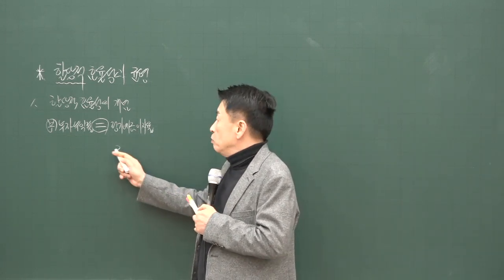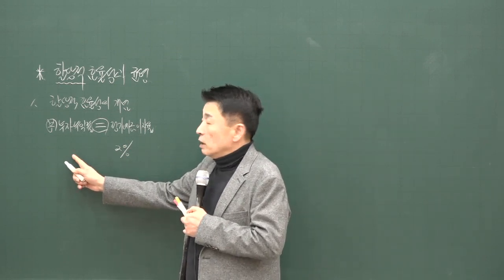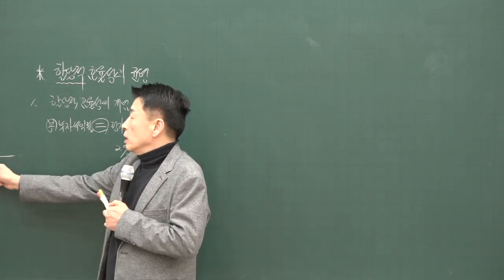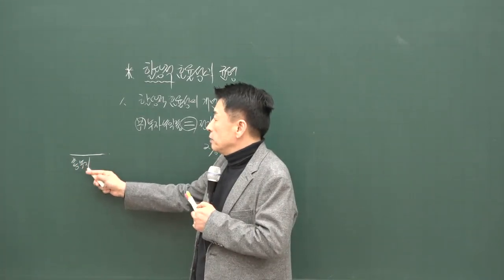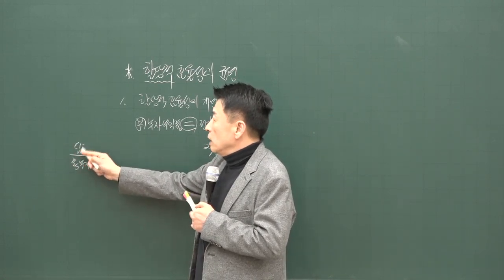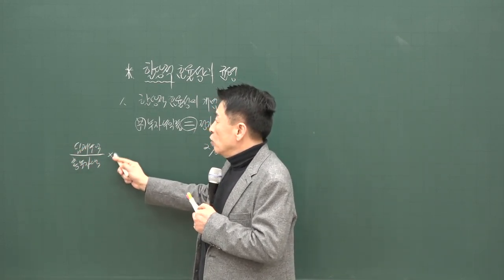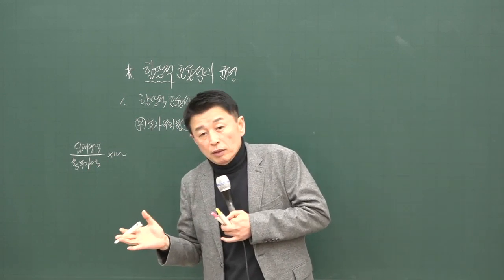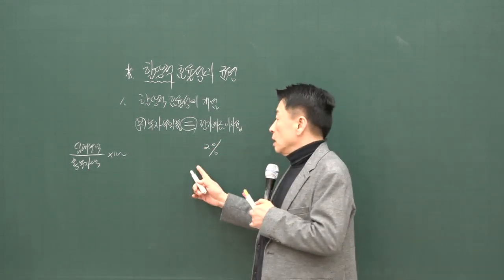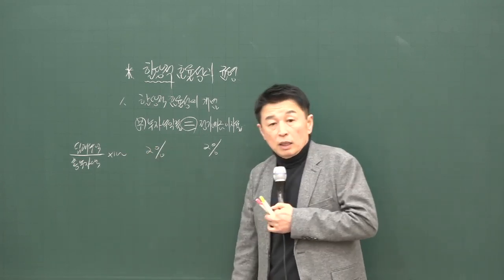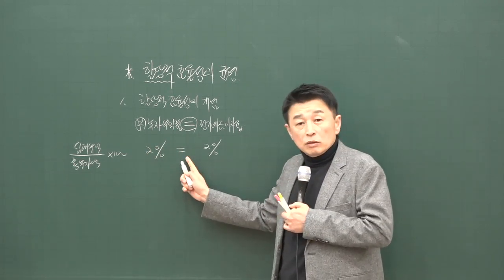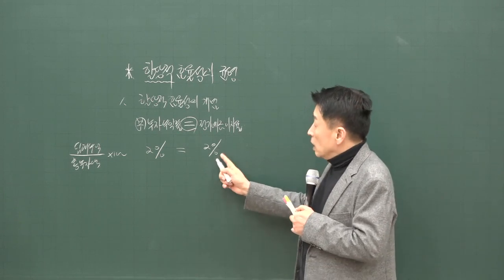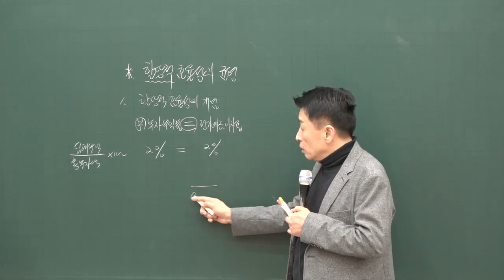예를 들어 정기예금 이자율이 2%가 주어져 있을 때, 부동산 투자 수익률은 총 투자금액 대비 임대 수익으로 산정해요. 이 수익률의 크기와 자본시장의 이자율을 비교합니다. 만약 부동산 수익률도 2%라면, 위험이 작은 예금에 비해 부동산은 위험이 크기 때문에 단순히 수익률이 같다는 의미가 아닙니다. 여기서 2%의 이자율이 작게 주어진 이유는 위험이 작기 때문이에요.